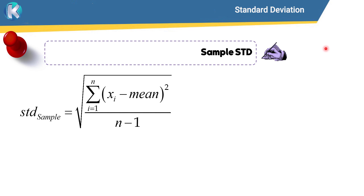Now let's talk about the sample standard deviation and its formula. The formula involves taking every data point minus the mean, squaring it, summing those values, dividing by n minus 1 (the number of values minus 1), and finally taking the square root.